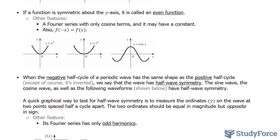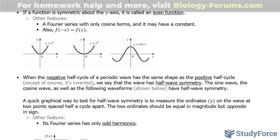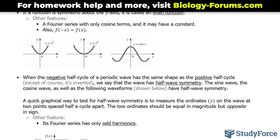If the function is symmetrical about the y-axis, it is called an even function. Its Fourier series contains only cosine terms and it may or may not contain a constant. In addition, substituting negative x into where you see x's in your function will result in the same function.